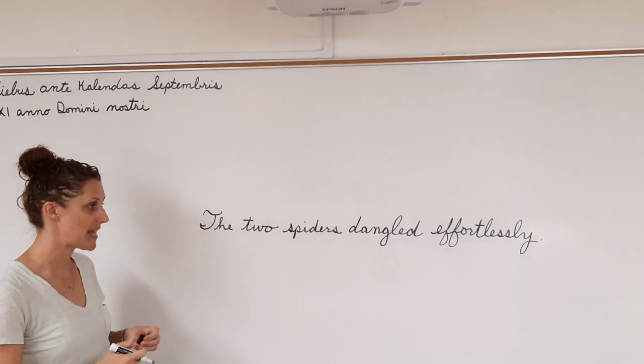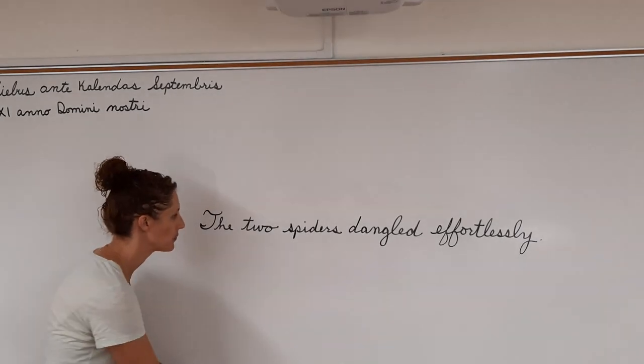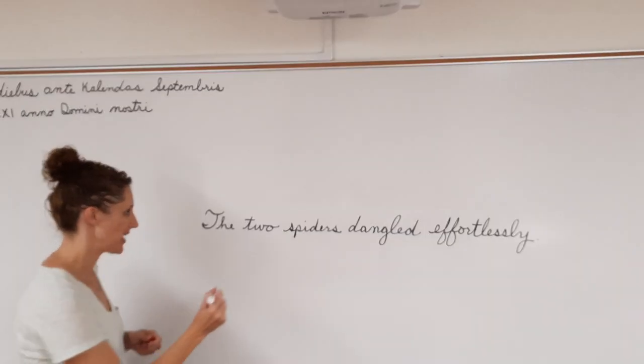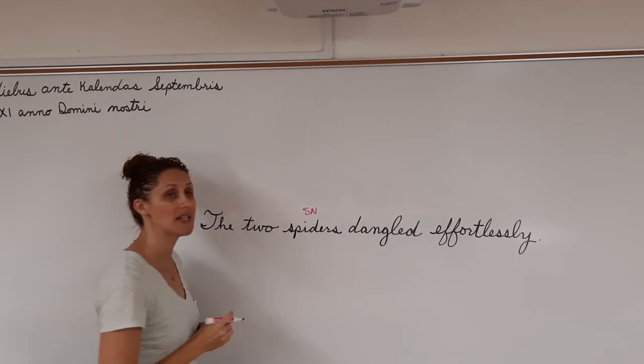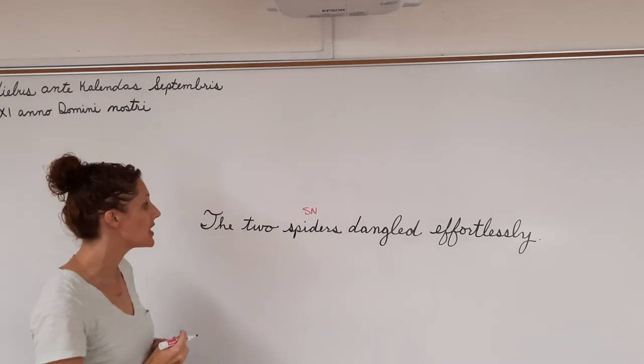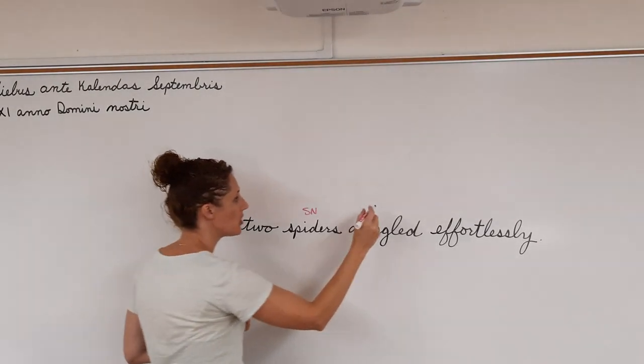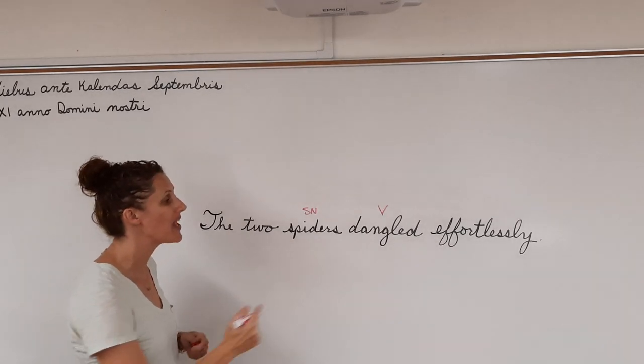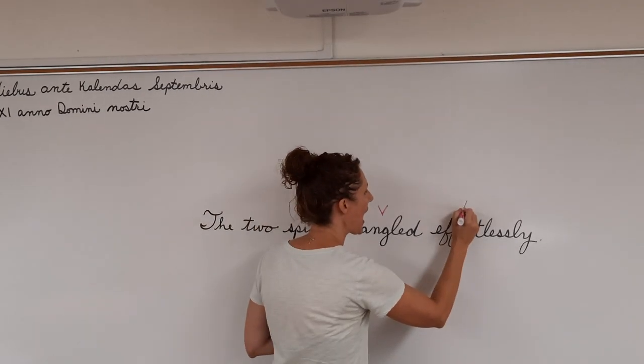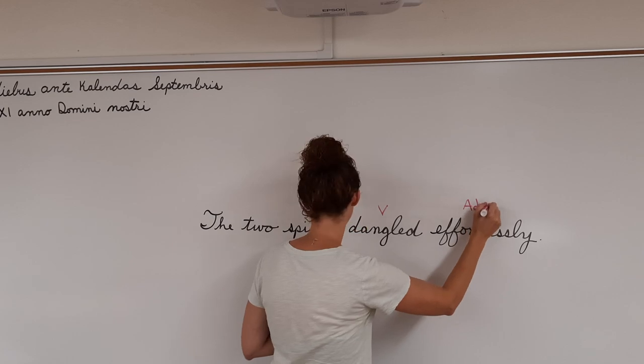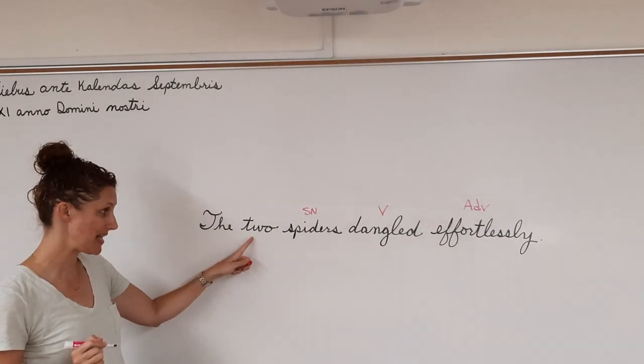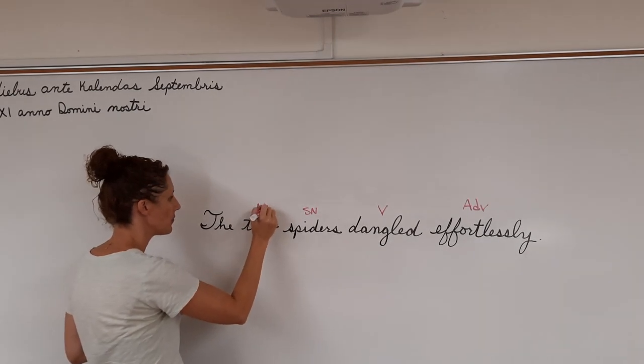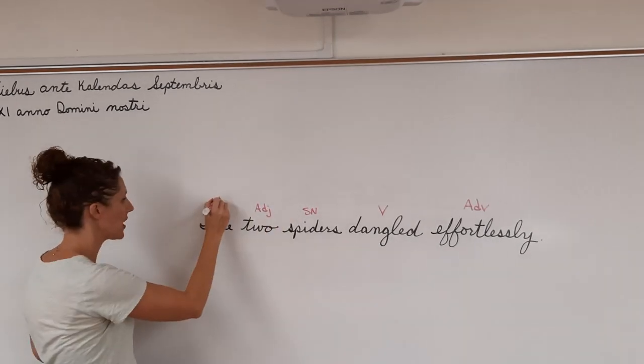The two spiders dangled effortlessly. What dangled effortlessly? Spiders. Subject noun. What is being said about spiders? Spiders dangled. Verb. How did the spiders dangle? Effortlessly. Adverb. What kind or how many spiders? Two. Adjective. The article adjective.